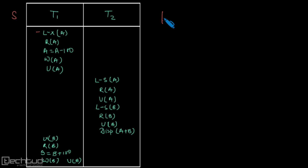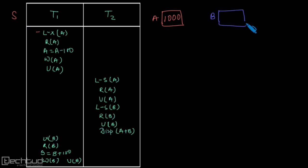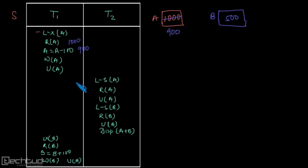Let's assume the initial value of database item A is 1000 and the value of B is 500. T1 performs an exclusive lock on A, reads A equal to 1000, then decreases the value of A to 900, and writes back 900 into A. It then unlocks data item A.